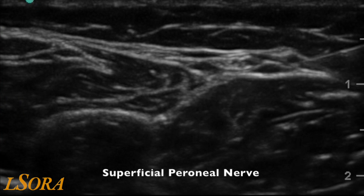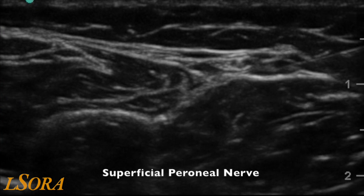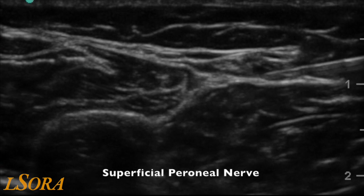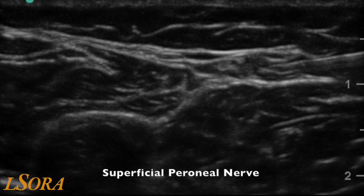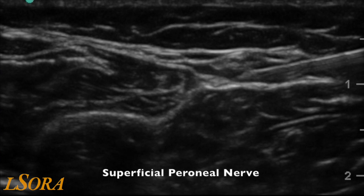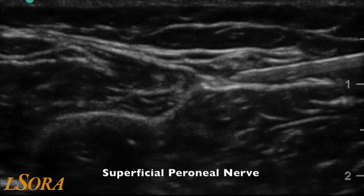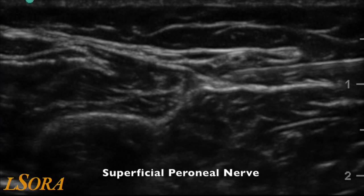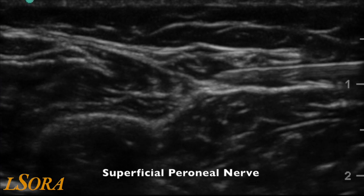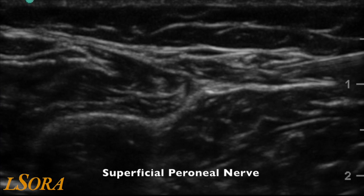In this block of the superficial peroneal nerve, you see the needle introduced in-plane from the right-hand side of the screen. Small aliquots of local anaesthetic are used to locate the nerve and surround it with local anaesthetic.